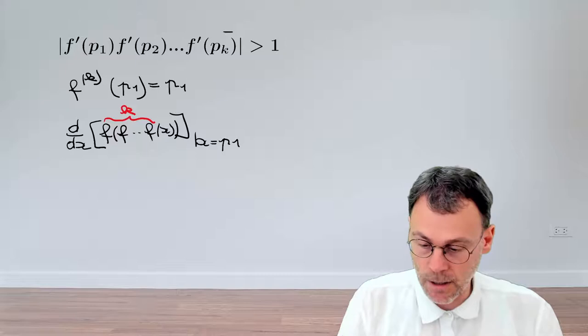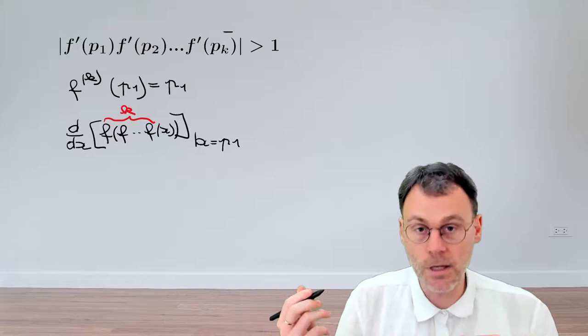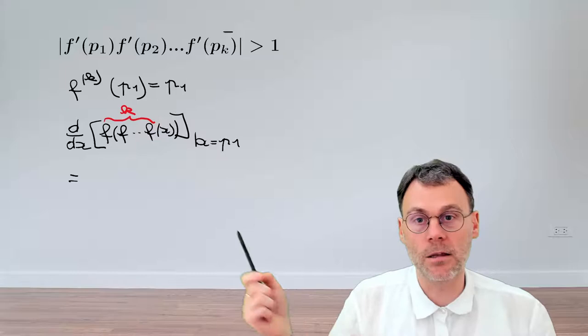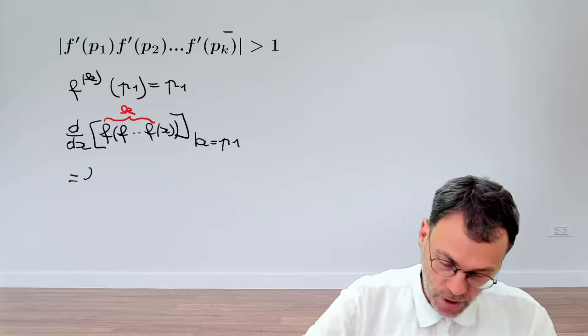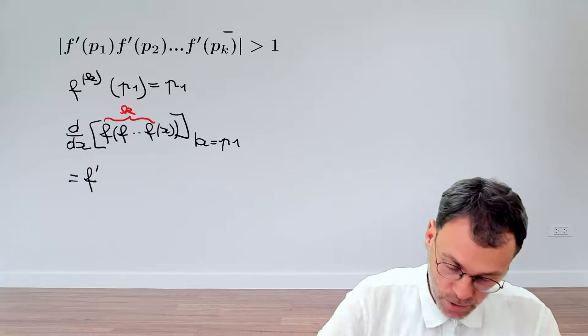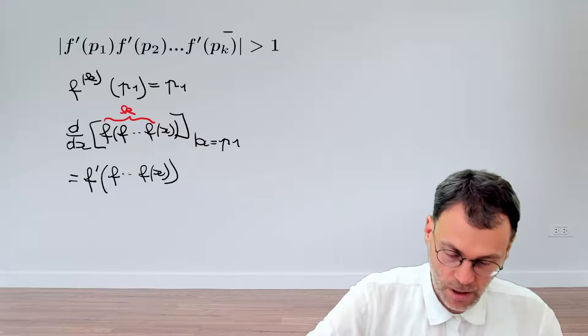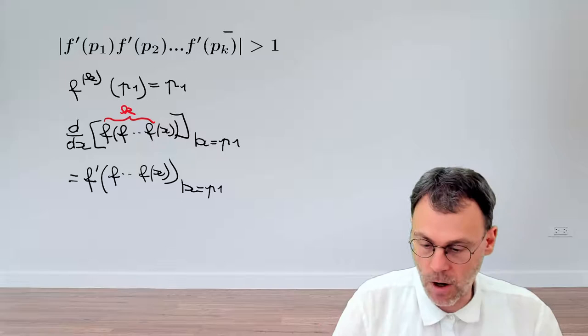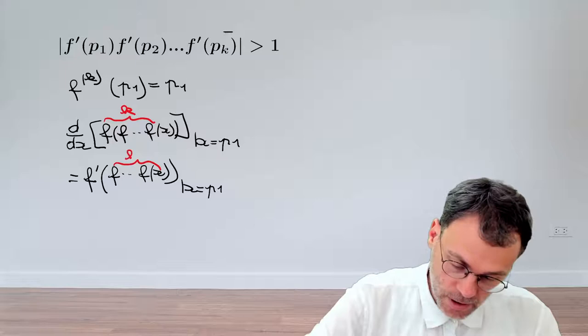Let's continue. If we take the derivative of this composite function, obviously our friend here will be the chain rule. So for the chain rule, we first take the derivative of the outer function. So this is going to be f prime, the outer f. And then we evaluate that at the argument, the argument here was f of x at the point p1. And how many times do we evaluate f inside that argument? Well, that's going to be k minus 1 times.